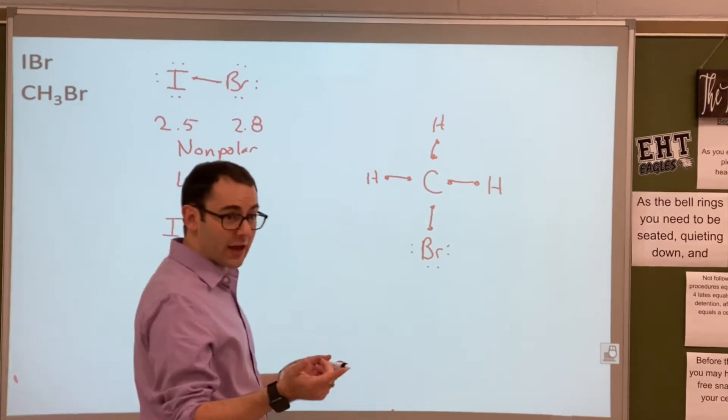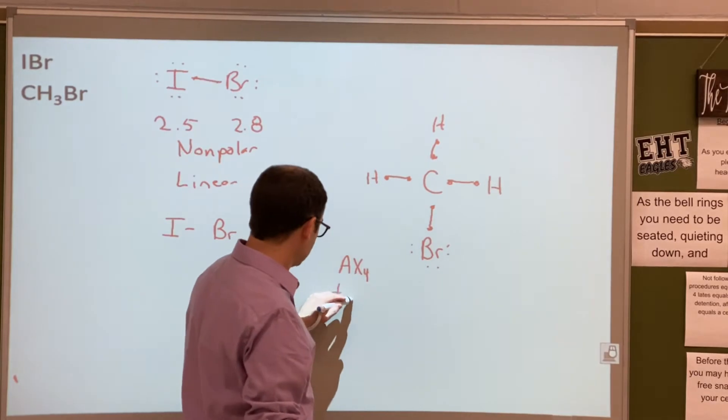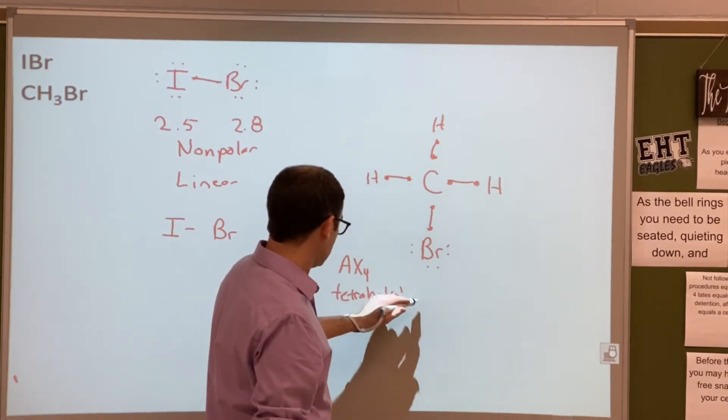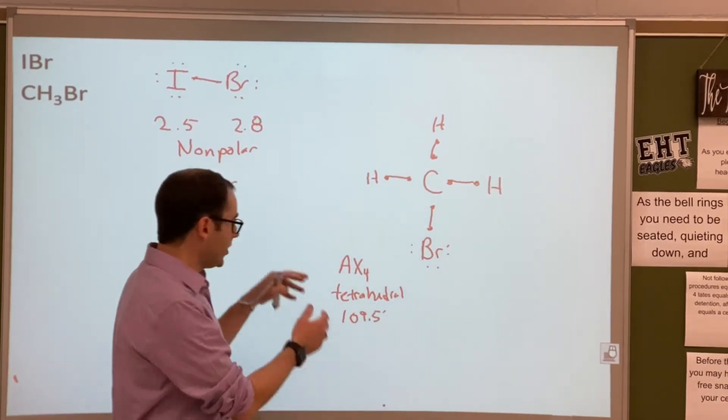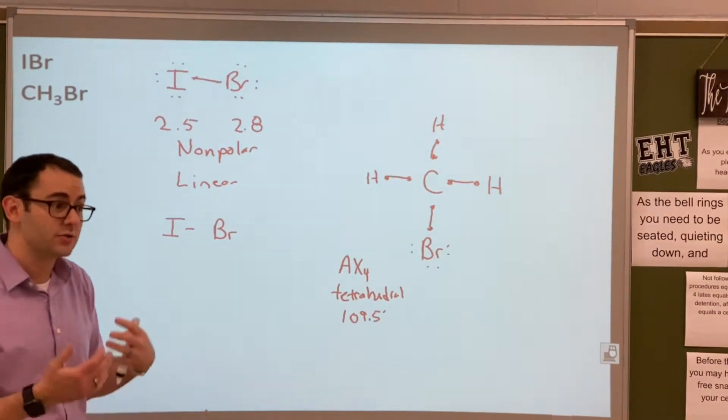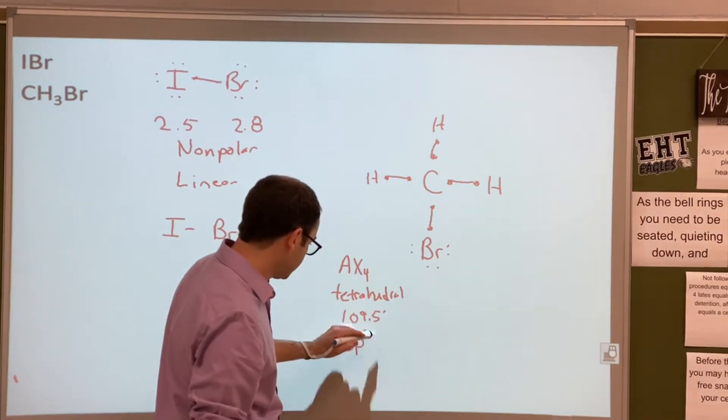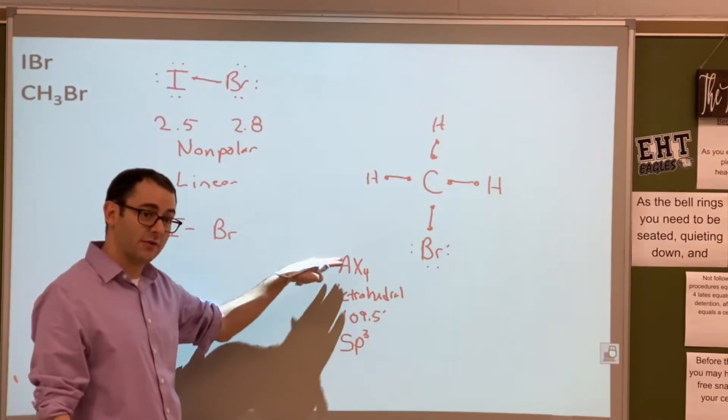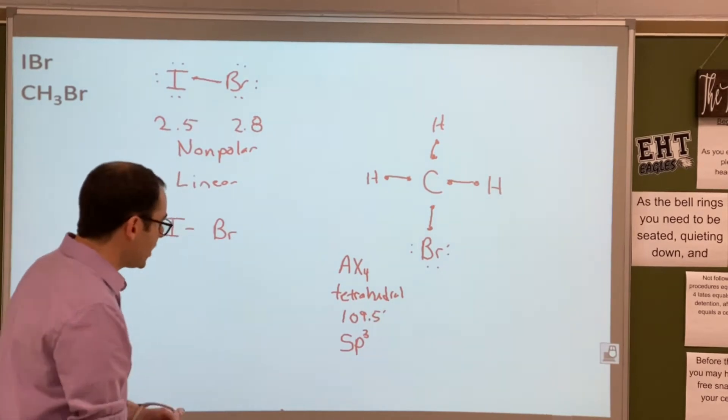AXE. What's the AX for this one? AX4, which is tetrahedral. Angle? 109.5. Good. So you should figure these out first. Since it's also tetrahedral, it's going to be SP3 hybridization. Because this just goes together with it now. So whenever you see AX4, you think of these other three things as well.